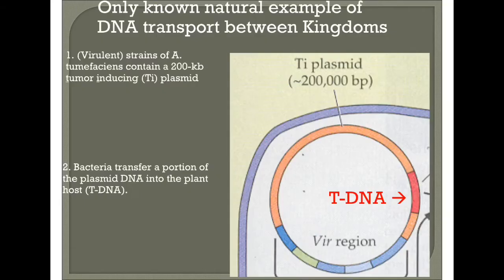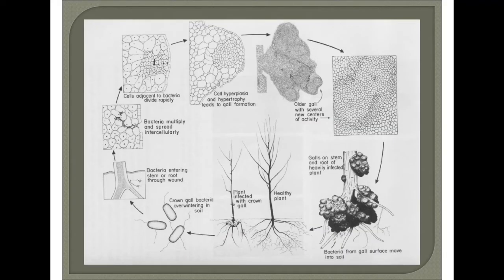Agrobacterium-mediated transformation is the only known natural example of DNA transport between kingdoms. Virulent strains of Agrobacterium tumefaciens contain a 200 KB tumor-inducing Ti plasmid. The bacteria transfers a portion of the plasmid DNA into the plant as T-DNA. Agrobacterium tumefaciens infects dicotyledonous plants, with bacteria entering the stem or root through a wound, multiplying and spreading intercellularly, and finally forming crown gall-like structures.